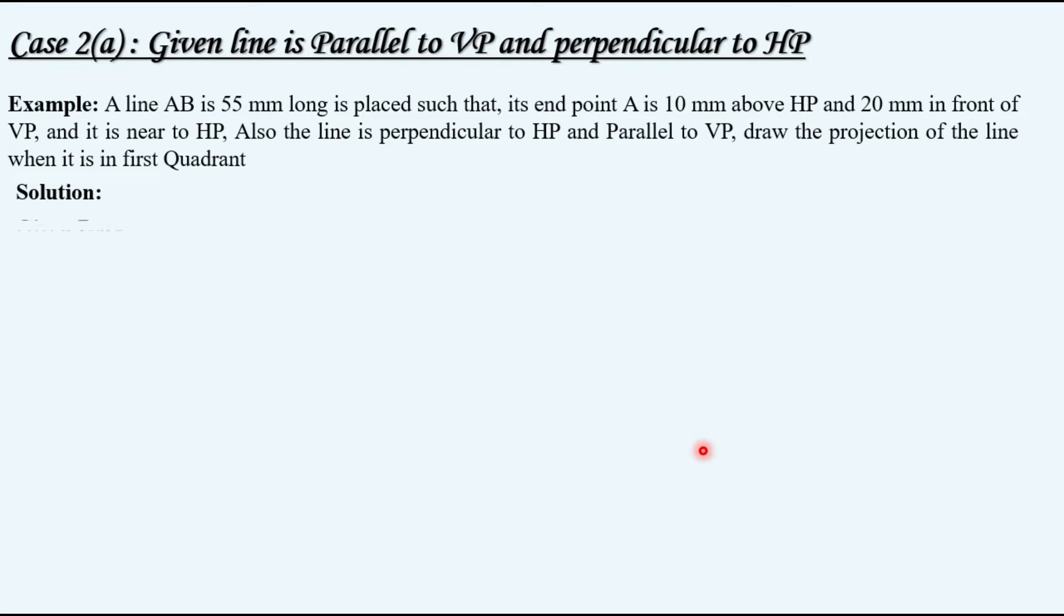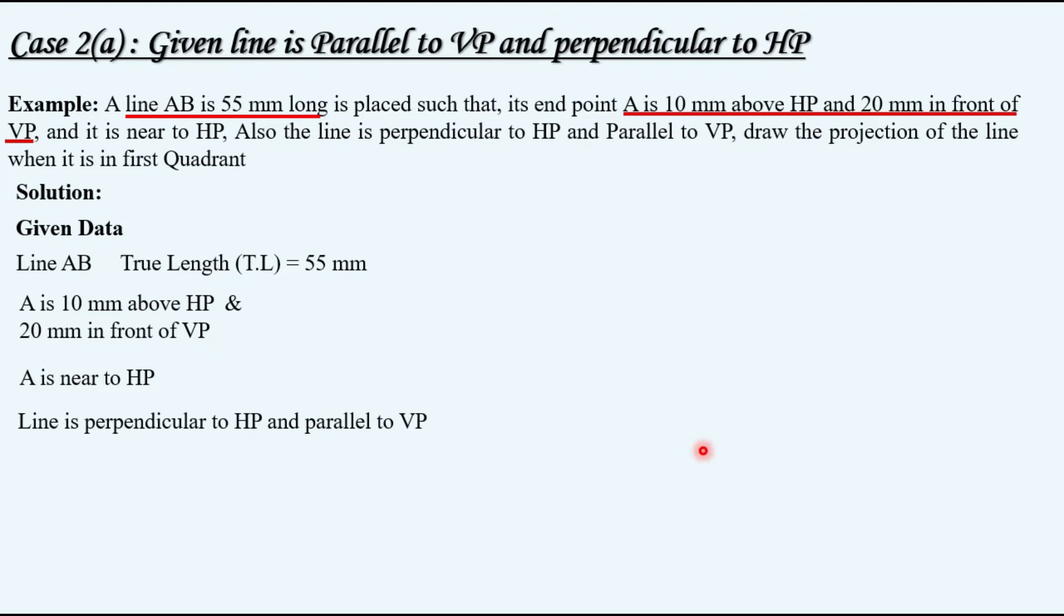Let's extract the given data first. Line AB is given to us with 55 mm as true length. Position of endpoint A is mentioned: 10 mm above HP and 20 mm in front of VP. Also it is mentioned A is near to HP. Line is perpendicular to HP and parallel to VP. Line is given in first quadrant.